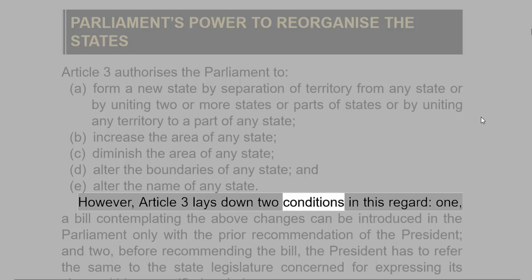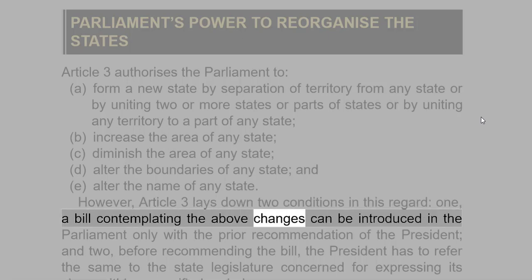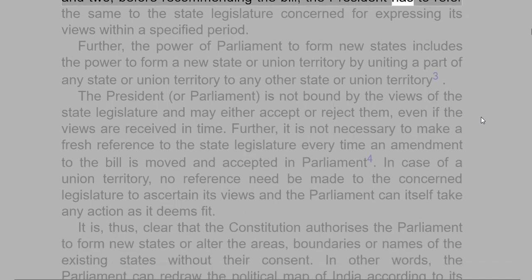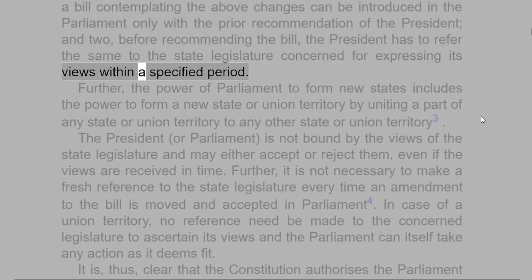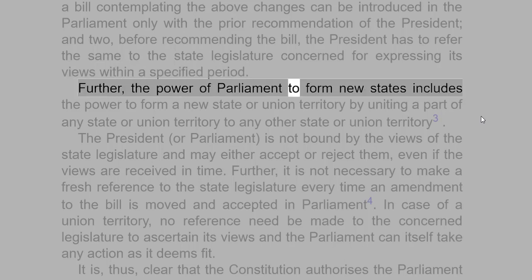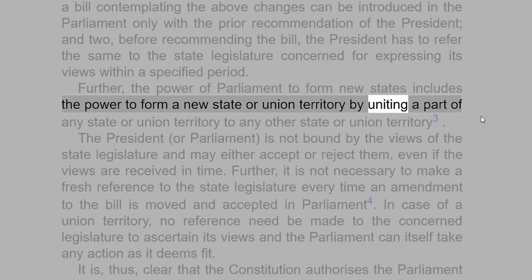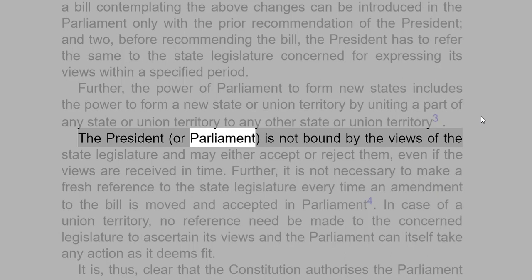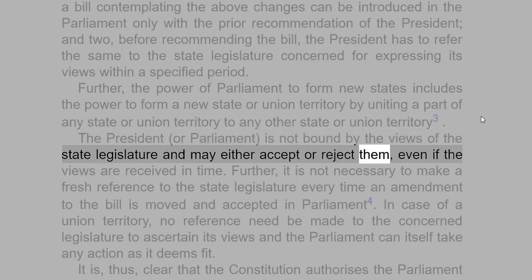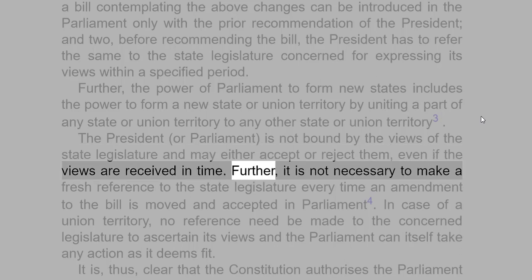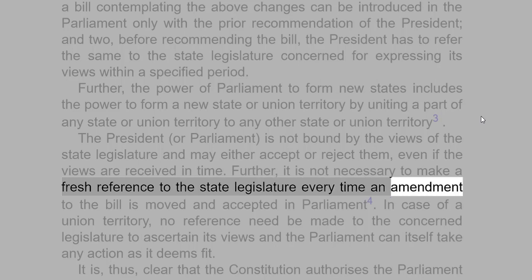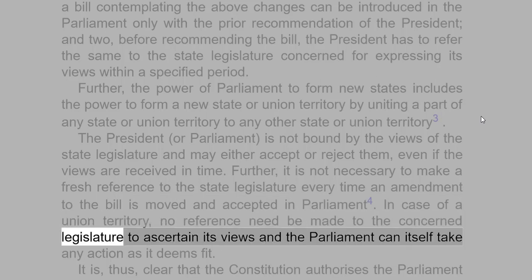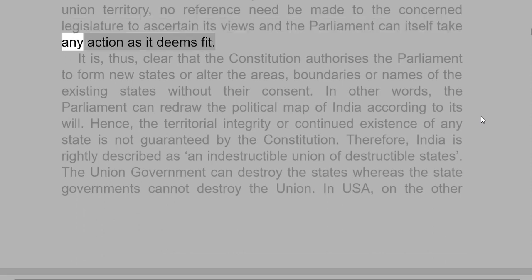However, Article 3 lays down two conditions: (1) a bill contemplating the above changes can be introduced in Parliament only with the prior recommendation of the President, and (2) before recommending the bill, the President has to refer the same to the state legislature concerned for expressing its views within a specified period. The President or Parliament is not bound by the views of the state legislature. Further, it is not necessary to make a fresh reference to the state legislature every time an amendment to the bill is moved and accepted in Parliament. In case of a Union territory, no reference need be made to the concerned legislature and Parliament can itself take any action as it deems fit.